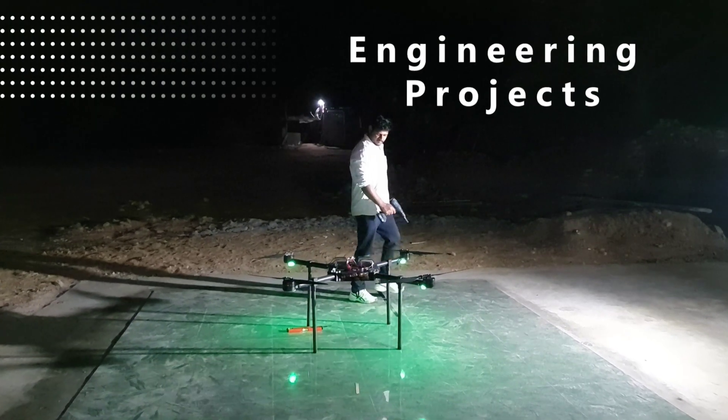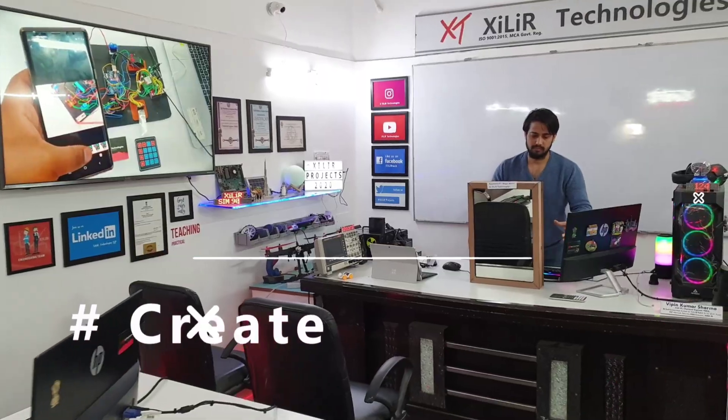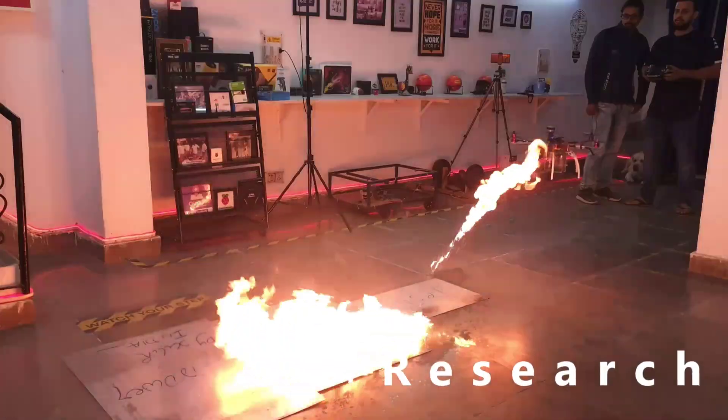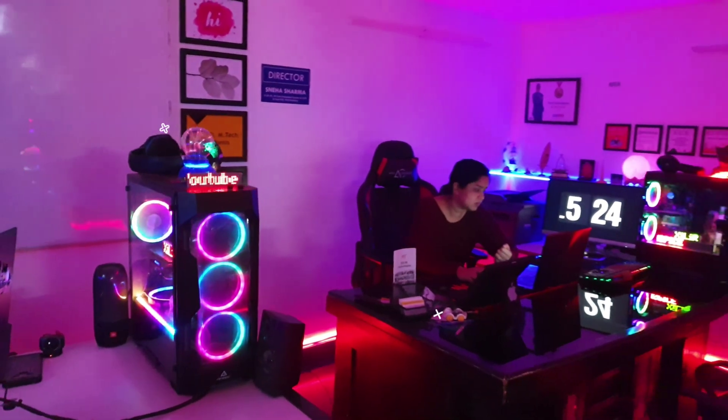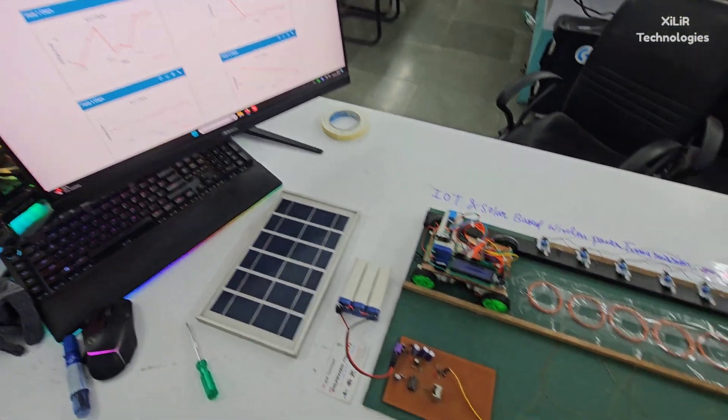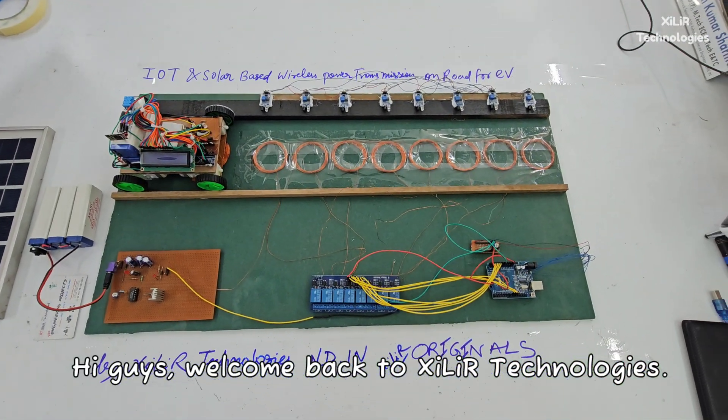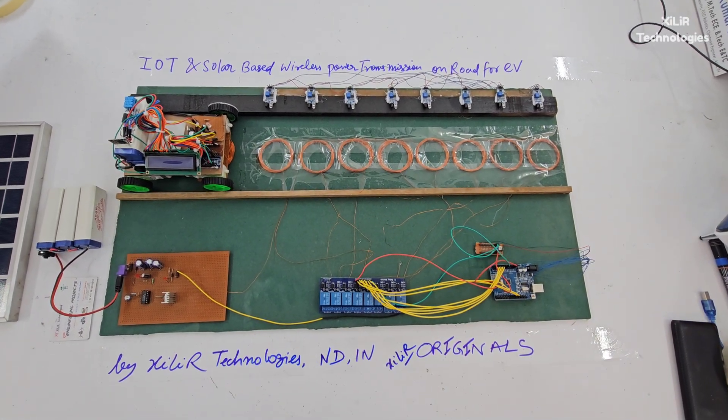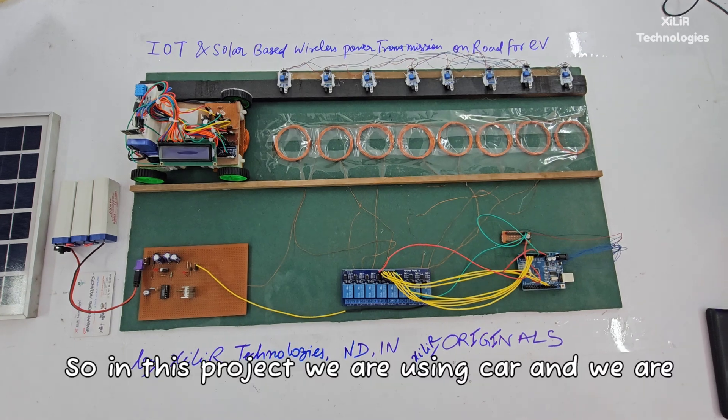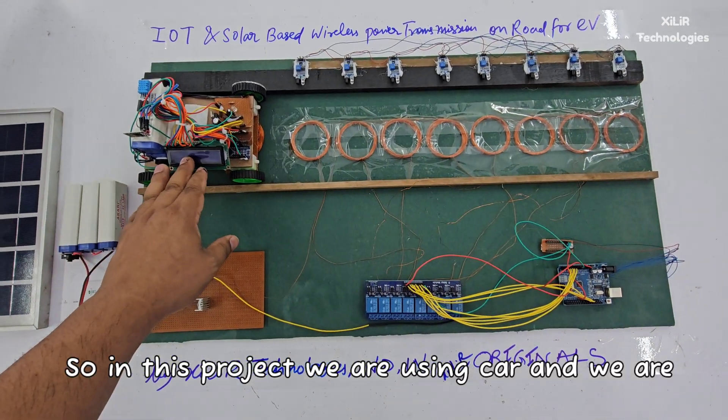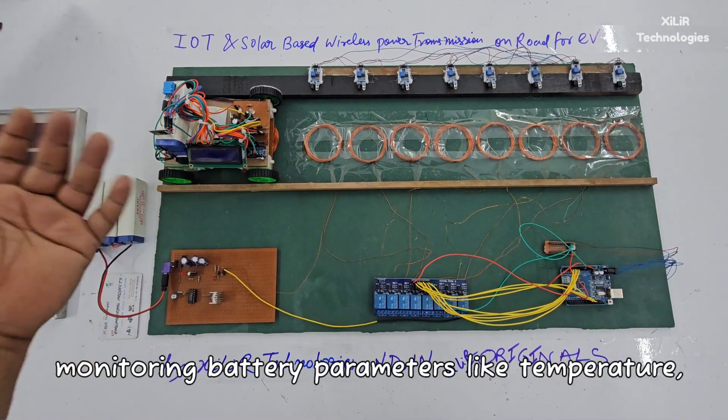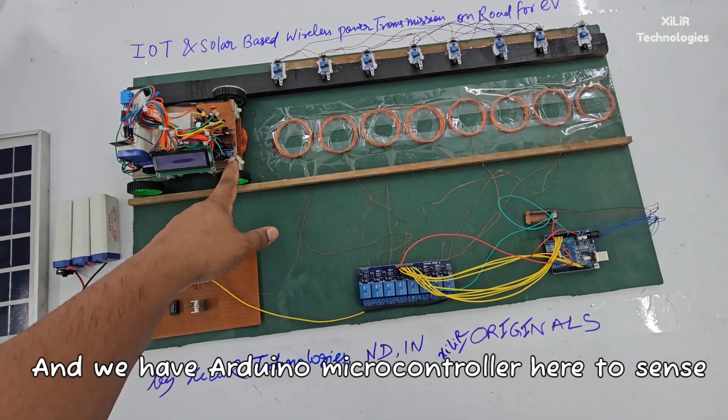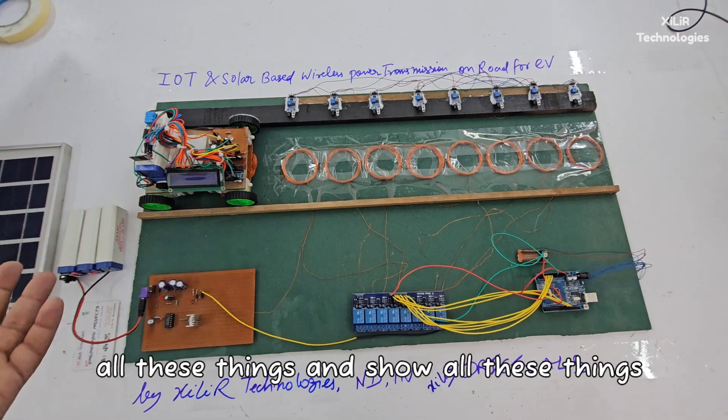Hi guys, welcome back to Zala Technologies. Today I'm going to demonstrate a project named IoT and Solar Based Wireless Power Transmission on Road for Electrical Vehicles. In this project we are using a car and we are monitoring battery parameters like temperature, humidity, battery percentage, and voltage. We have an Arduino microcontroller here to sense all these things and show them on a web server.